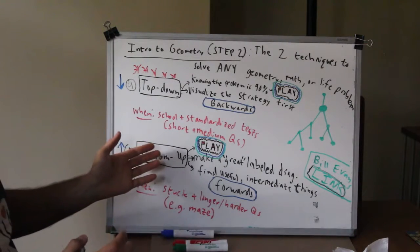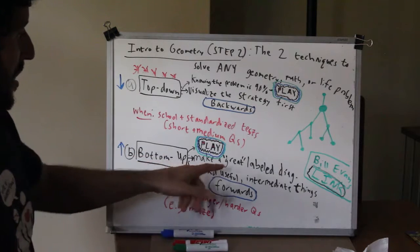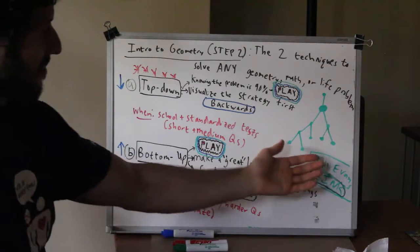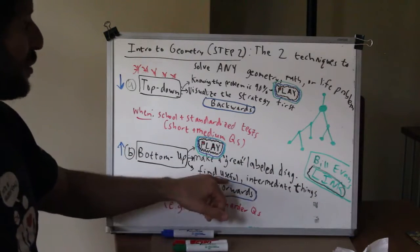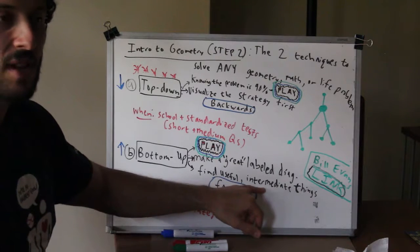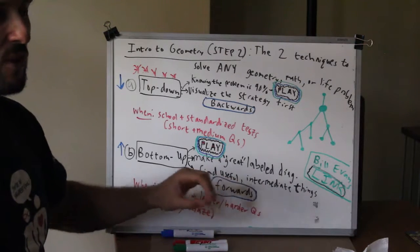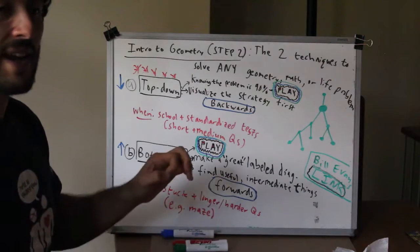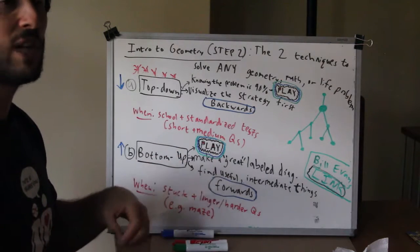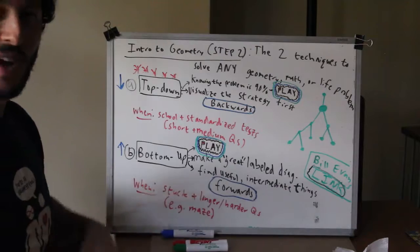The bottom-up is the reverse. You're going to start with a great labeled diagram and you're just going to start figuring out useful intermediate results. That can be literally anything useful. For example, let's say you have a triangle, you know one angle, you know a second angle, so you figure out a third angle and see that helps you find something else.